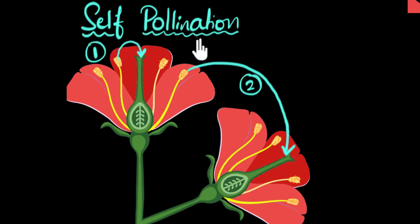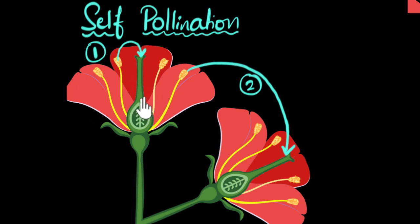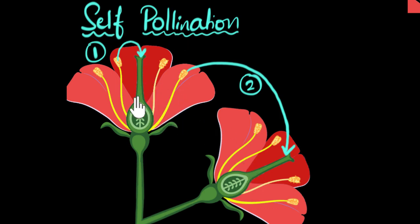These are examples of self-pollination. For the first type to happen, the flower needs to be bisexual, meaning it has to have both the male and the female reproductive parts. On the other hand, if the flowers are unisexual, they can still self-pollinate — a male flower can transfer pollen grains to a female flower belonging to the same plant.